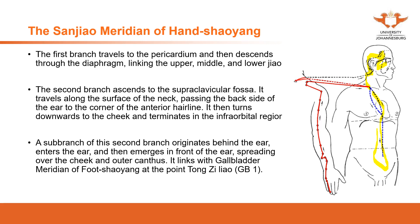There is a sub-branch from the second branch — another branch originating behind the ear. It enters the ear directly and emerges in front of the ear. From behind the ear it enters, then emerges in front of the ear, spreading over the cheek and outer canthus, linking with the gallbladder meridian.